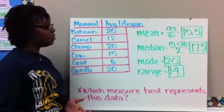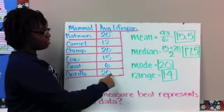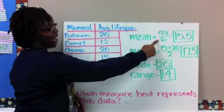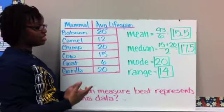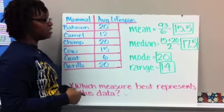All right, so in this example, you should have calculated the mean by adding the values together, which was 93, and then dividing by how many numbers are in the set, which is 6, and 93 divided by 6 gives us a mean of 15 and 5 tenths.